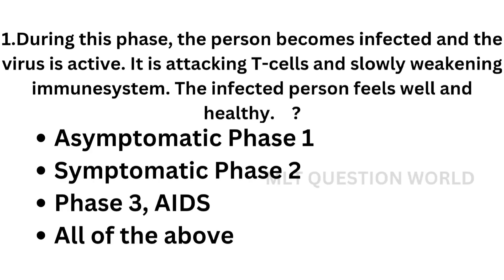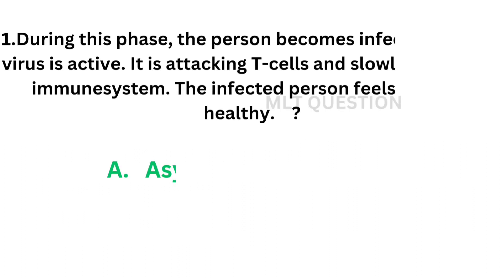Question number 1: During this phase, the person becomes infected and the virus is active. It is attacking T cells and slowly weakening the immune system. The infected person feels well and healthy. The phase is: option A, asymptomatic phase 1; option B, symptomatic phase 2; option C, phase 3 AIDS; option D, all of the above.